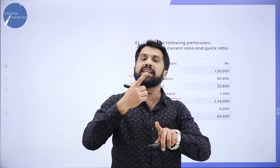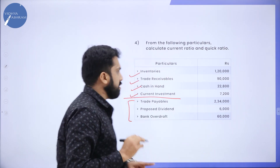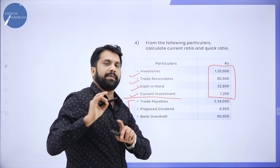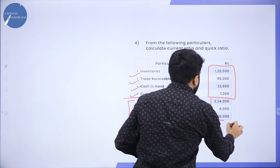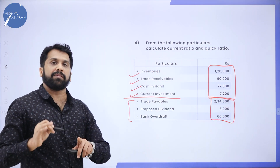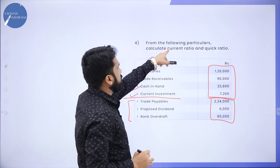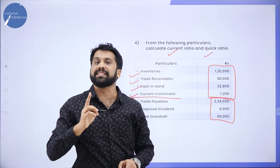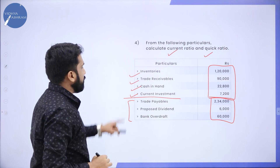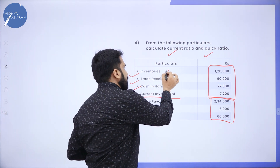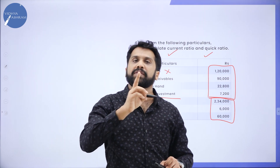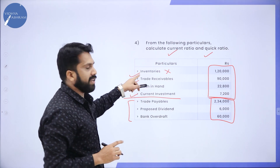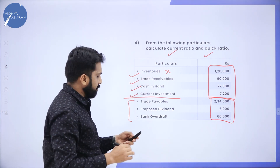Anything which is payable, we call it Current Liability. Add all Current Assets using the same procedure, and add all Current Liabilities. For Quick Ratio, we use the same information but remove two things: Inventory — another name for stock — and anything prepaid. In this problem, there is no prepaid, so we only remove Inventory.